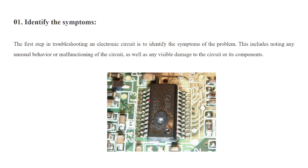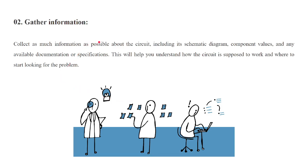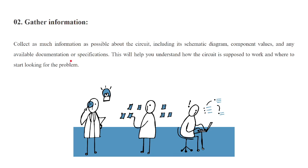The second step is to gather information. You have to collect information about the schematic diagrams or any other diagrams so that you can easily troubleshoot the circuit. With the help of a schematic diagram you can analyze which component is which and how it connects to others. Collect as much information as possible about the circuit, including its schematic diagram, component values, and any related documents. This will help you to understand how the circuit is supposed to work.